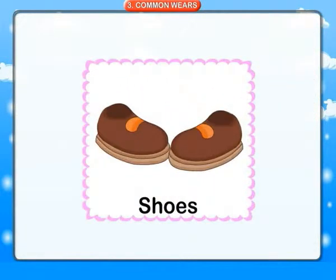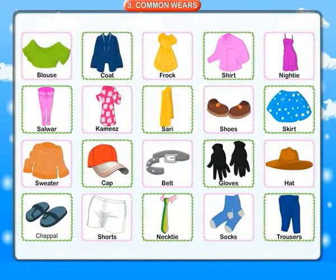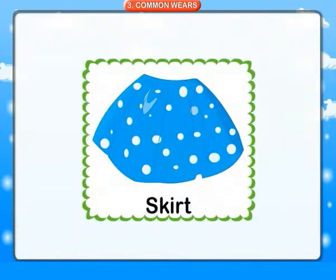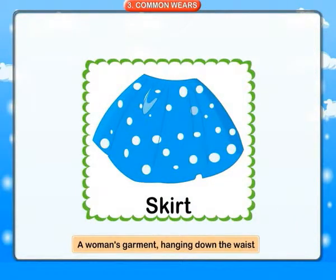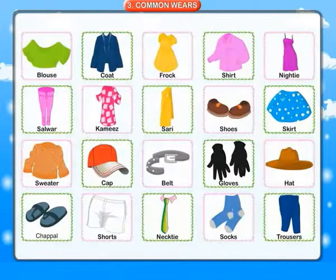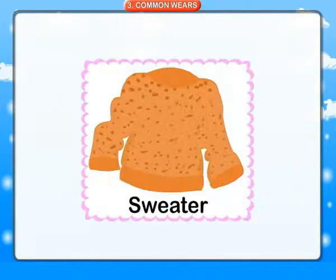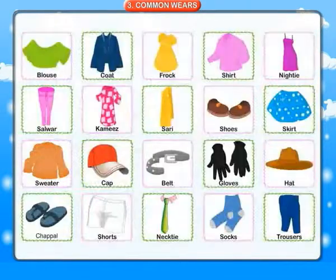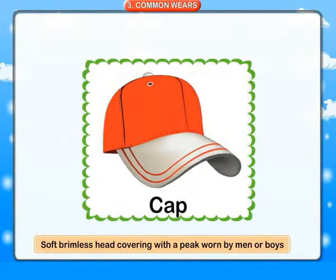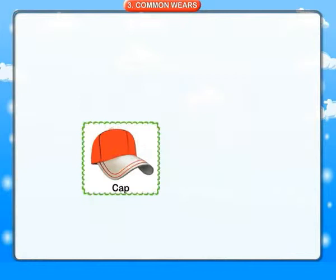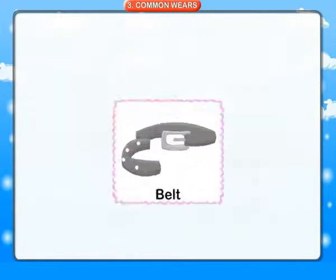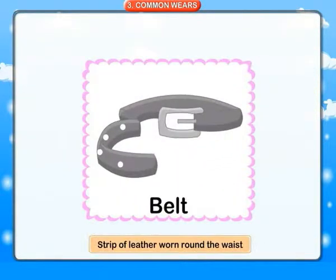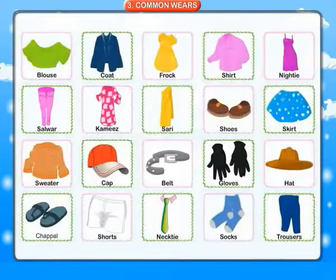Shoes: an outer covering for a person's feet. Skirt: a women's garment hanging down the waist. Sweater. Pullover. Cap: soft brimless head covering with a beak worn by men or boys. Belt: a strip of leather worn round the waist.